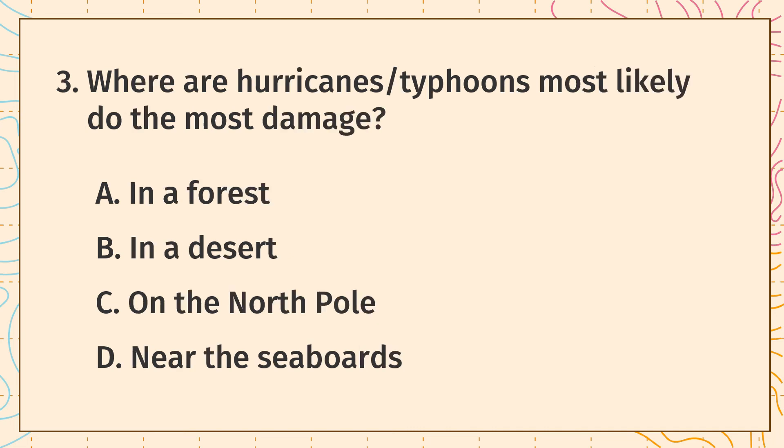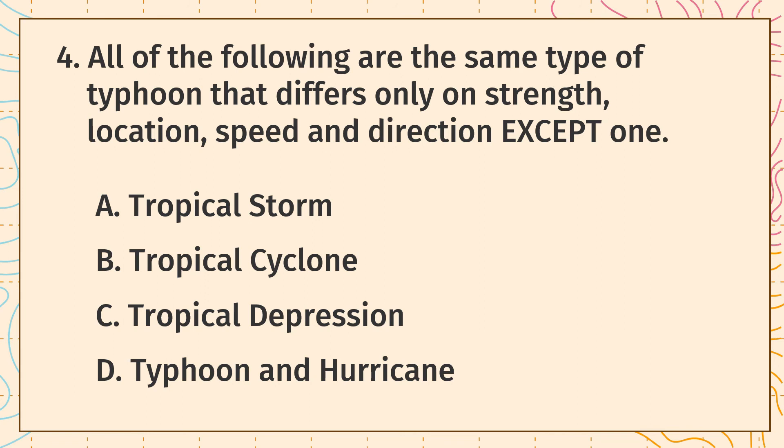Question 3: Where are hurricanes/typhoons most likely to do the most damage? A. In a forest. B. In a desert. C. On the north pole. D. Near the seaboards. Question 4: All of the following are the same type of typhoon that differs only on strength, location, speed, and direction, except: A. Tropical storm. B. Tropical cyclone. C. Tropical depression. D. Typhoon and hurricane.